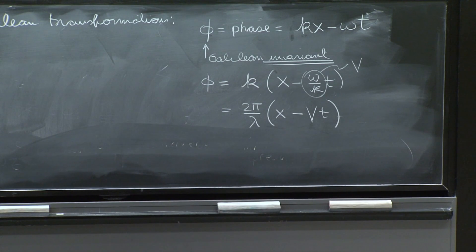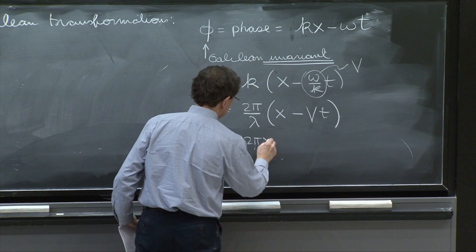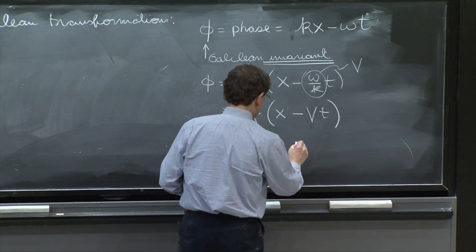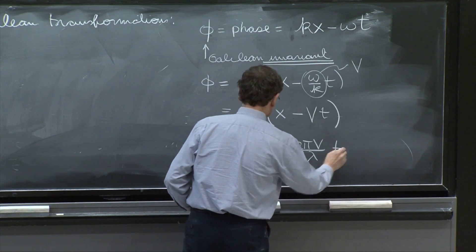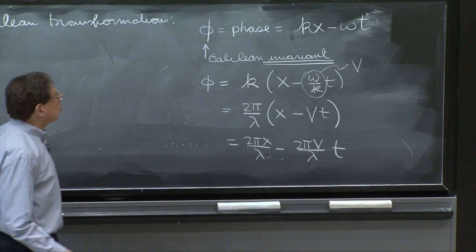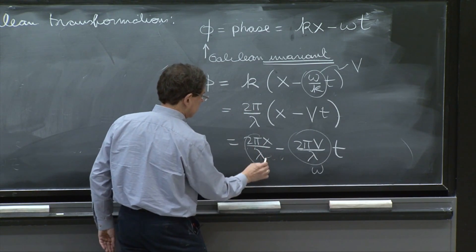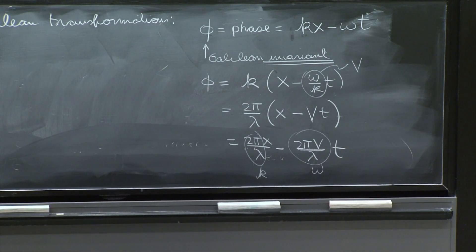And we'll write it one last way. 2 pi x over lambda minus 2 pi v over lambda t. And this quantity is omega. And this quantity is k. So this is our phase.